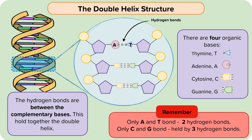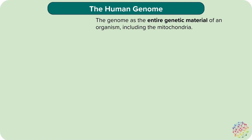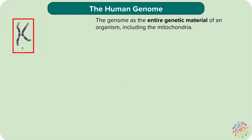The genome of an organism is the entire genetic material of an organism. This includes all of the chromosomes and the genetic material found in the mitochondria. Mitochondrial DNA is separate to that found in the nucleus, and is inherited only from the mother.